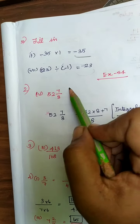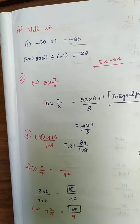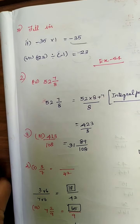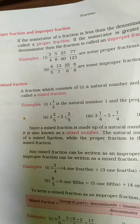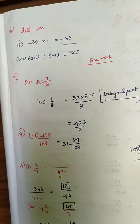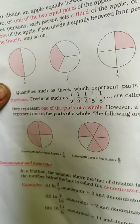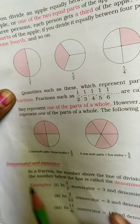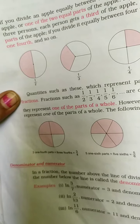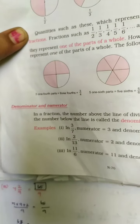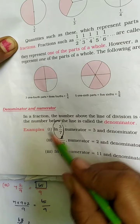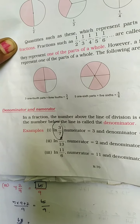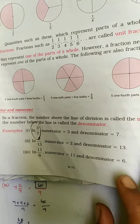Next, exercise 5A — we are going into the next chapter: Fractions. In a fraction you need to first understand what is a numerator and what is a denominator. The number above the line we call the numerator, and the number below the line we call the denominator.